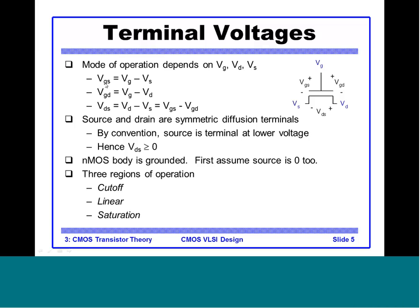So VGS = VG − VS. If VS is 0 then VGS is simply VG. The gate-to-drain voltage is VGD = VG − VD, and VDS = VGS − VD. For NMOS, we assume for now that the substrate is grounded, meaning VS and the body are both at 0 voltage. We will see how varying VS and VB affects operation, but for now let us assume source and body both at 0.